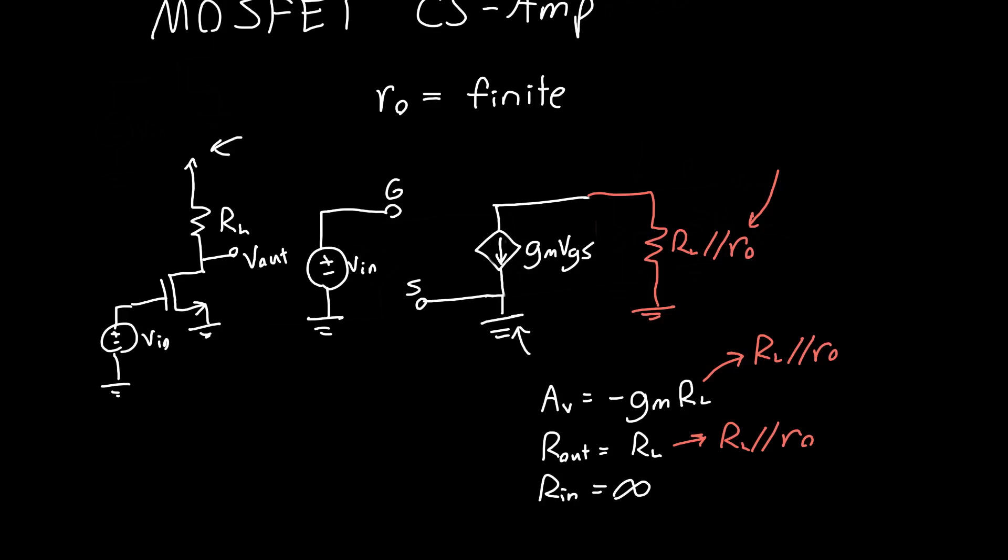And so our new voltage gain is -gm*RL in parallel with RO, our new output resistance is just RL in parallel with RO, and our input resistance isn't affected - it's still infinite.